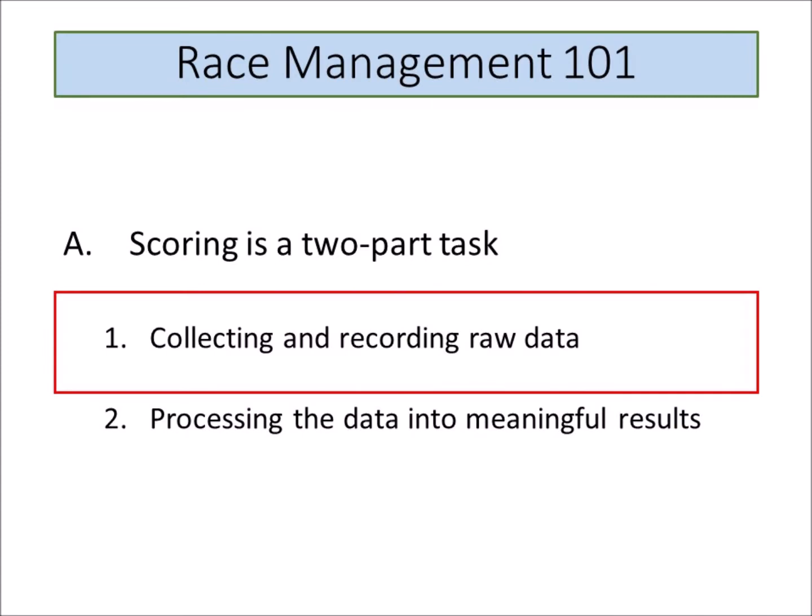I think it is useful to look at scoring as a two-part data task. Collecting and recording raw data is the first step — this is the prime directive of the finish boat. Processing the data into a meaningful finished product, i.e. race results, is a different task. It's often done separately from recording finishes, it's frequently done by other people, and it can involve a computer program.